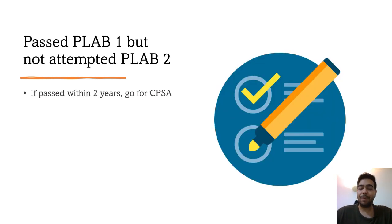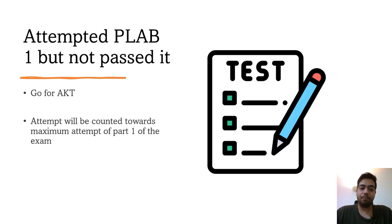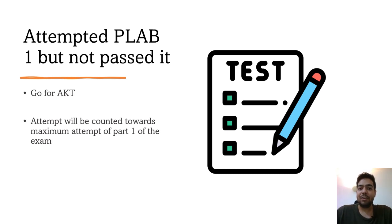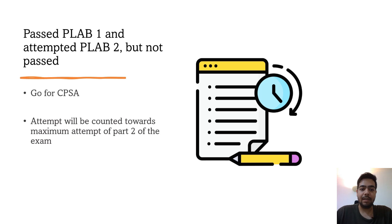If you have passed PLAB 1 but not attempted PLAB 2, you can go directly for the CPSA, the second part of the UK MLA. If you have attempted but not passed PLAB 1, you can go for the AKT, and all your previous PLAB 1 attempts will be counted toward the AKT attempt limit. If you have passed PLAB 1 and attempted but not passed PLAB 2, you can go directly for the CPSA, and all your PLAB 2 attempts will count toward the maximum attempts for the CPSA.